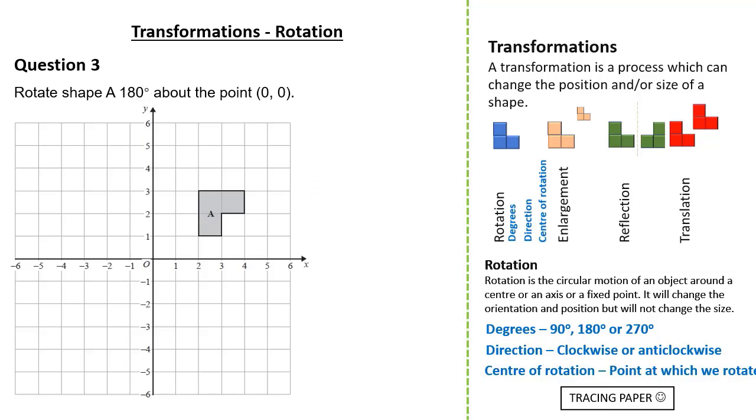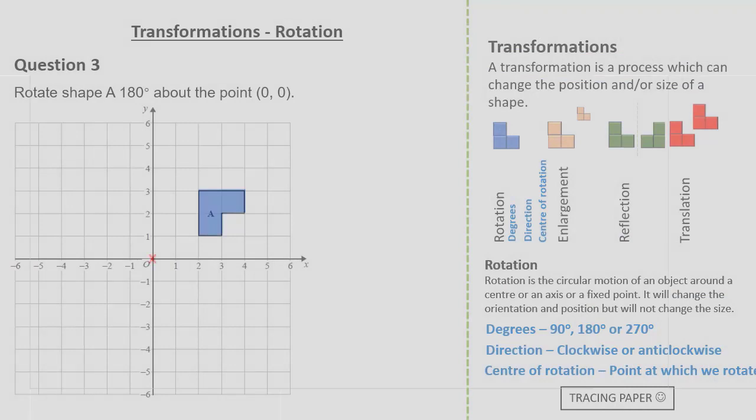Just like before let's get our tracing paper and trace our object and image. From here we simply put our pen point at the centre of enlargement and we rotate our tracing paper 180 degrees. In this question you don't really need to draw the little cross.